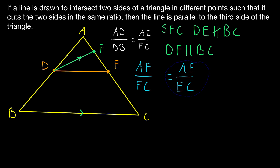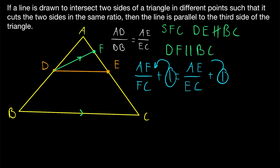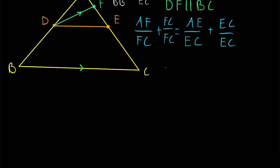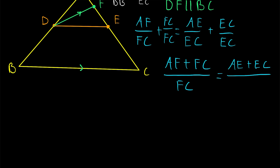What we're really going to do is add 1 to both sides of the equation AF over FC equals AE over EC. To bring the 1 terms into the fractions, we give them common denominators: we write 1 as FC over FC on the left, and 1 as EC over EC on the right. Then, combining fractions on both sides, we have AF plus FC divided by FC equals AE plus EC divided by EC.